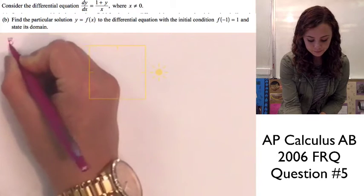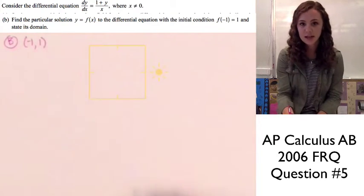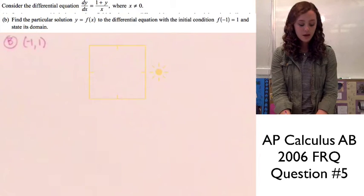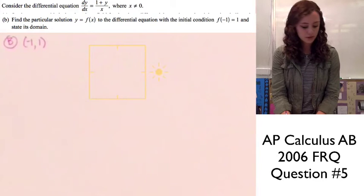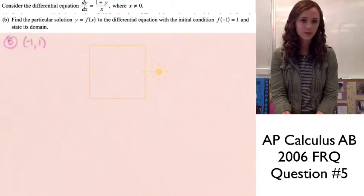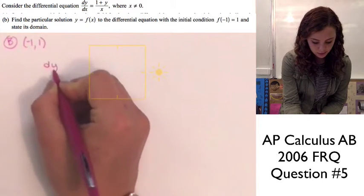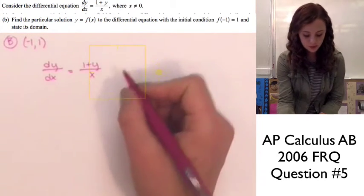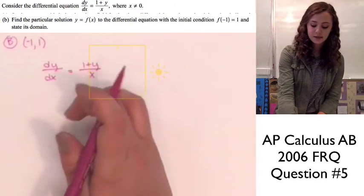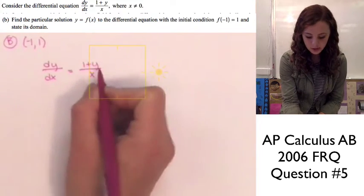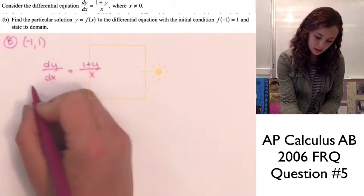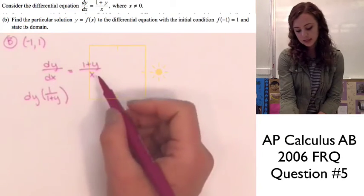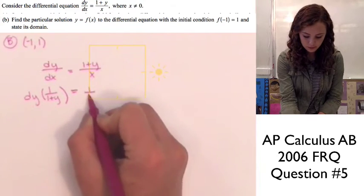We'll need that later when plugging in numbers to find the particular solution. This problem is asking us to integrate the given equation to find the original function. Our differential equation is dy/dx = (1 + y)/x. We need to get everything with y's on the left side and x's on the right side, so we divide by (1 + y) and multiply by dx to get: dy/(1 + y) = (1/x) dx.